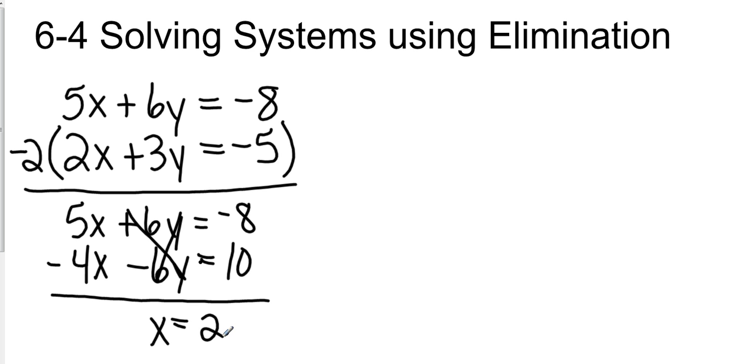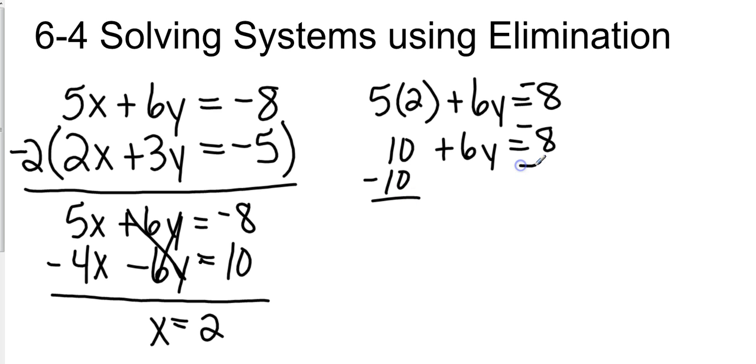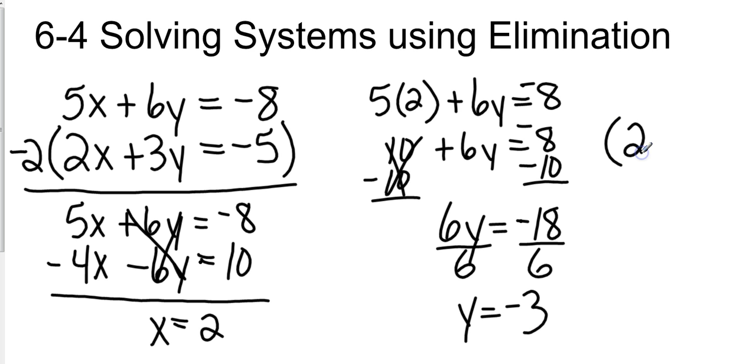Now this is just like all of our other problems. Once we've found x, all we have to do is plug it back into one of the equations. So let's take the top one. That's going to be 5 times 2 plus 6y equals negative 8. That gives me 10 plus 6y equals negative 8. So then I'm going to subtract 10 from both sides. And I get 6y equals negative 18 divided by 6 and y equals negative 3. Which makes my answer the coordinate 2, negative 3.